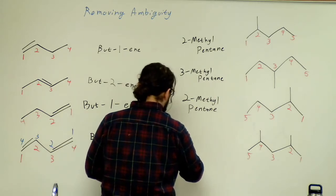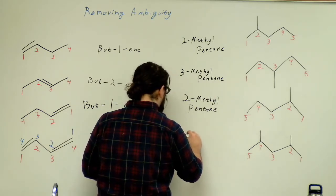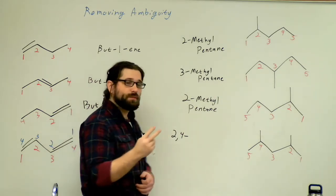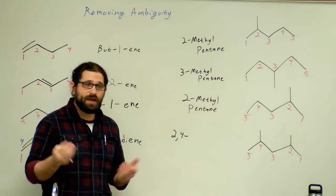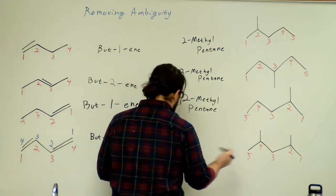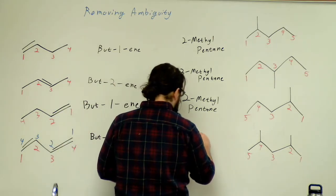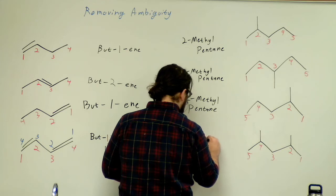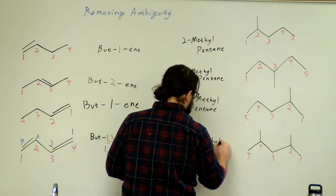So I've got a two and a four. So I'm going to write two, four, and then because I have two methyl groups, I'm going to use the prefix di. If I had three, I would say tri. If I had four, I'd say tetra. You probably won't ever see more than four. So 2,4-dimethylpentane.